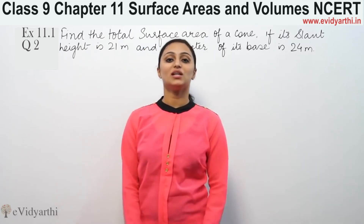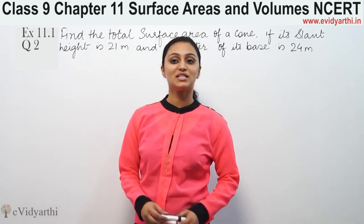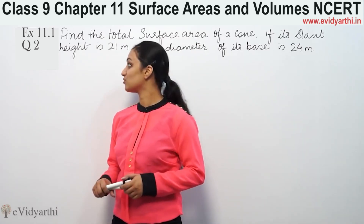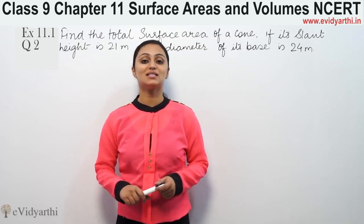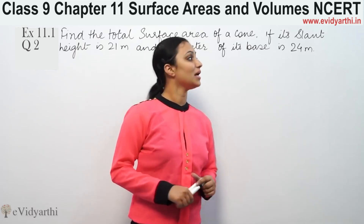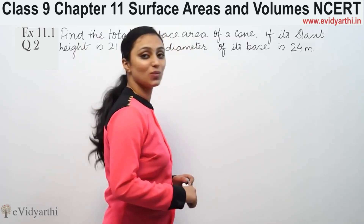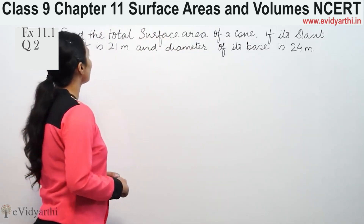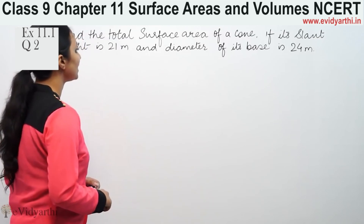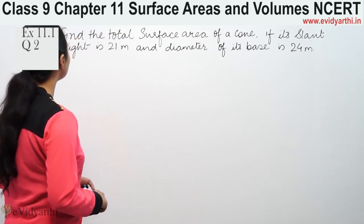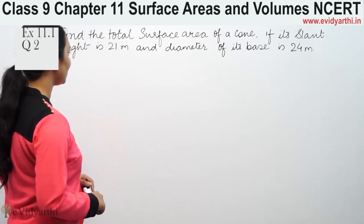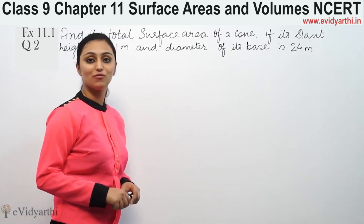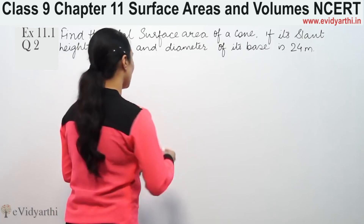Hi, this is Kushku with another question of surface area and volume. This is question number 2 from exercise 13.3, page number 221 from NCERT. The question says: find the total surface area of a cone if its slant height is 21 meters and the diameter of its base is 24 meters.